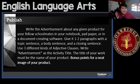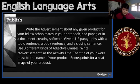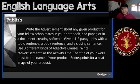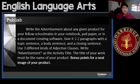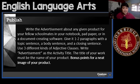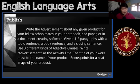And then in your publish — write the advertisement about any given product for your fellow schoolmates in your notebook, pad paper, or in a document creating software. Not just classmates — it could be schoolmates too, even people from lower or higher grades. Give one to two paragraphs with a topic sentence, a body sentence, and a closing sentence. Use three different kinds of adjective clauses. Write 'Advertisement' as the activity title, and the title of your work must be the name of your product. Bonus points for a neat image of your product — you can include it digitally, draw it, or color it.